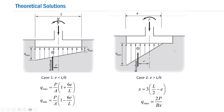In Case 2, when eccentricity E equals M/P is greater than L/6, the full length of the footing will not be in contact — there is partial separation. The contact length X is given by X = 3(L/2 − E), and the maximum pressure Q_max is obtained from force equilibrium as 2P divided by (B × X).